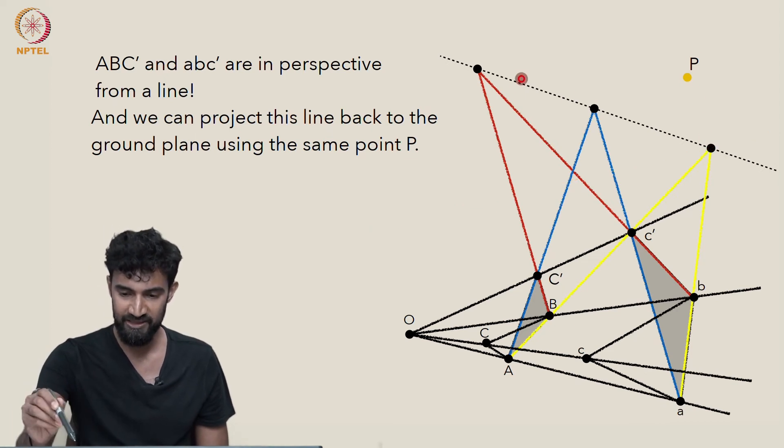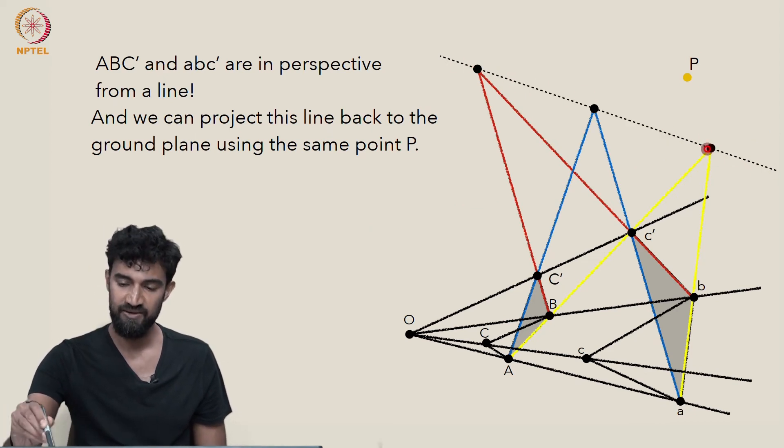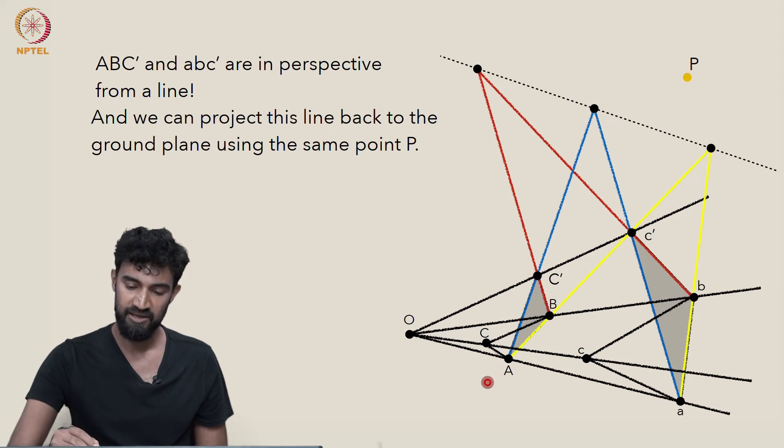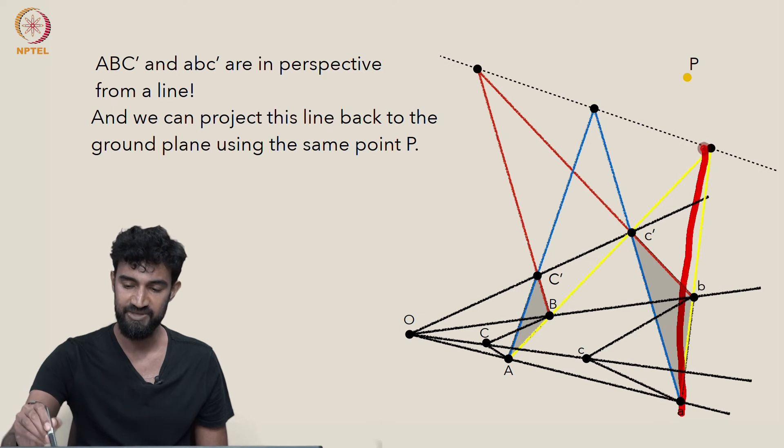Notice that on our axis, this point in particular, capital A, capital B intersects little a, little b at this point here. The two yellow lines intersect here. Well this is going to be in the ground plane because both this yellow line and this yellow line lie